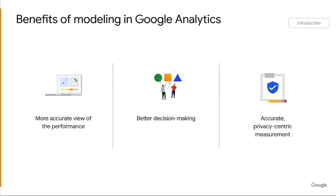Modeling poses several benefits to your business, including a more accurate view of your performance. Modeling can help you get a more complete picture of your website traffic and conversions when you lose data due to cookies consent, browser updates, and other factors — filling in the gaps with estimates based on historical data and machine learning algorithms. Better decision making: modeling can help you identify trends and patterns and understand how your website is performing, helping you make better decisions about your marketing campaigns and allocate resources more effectively. And lastly, accurate privacy-safe measurement: Google Analytics modeling is helping advertisers preserve measurement while respecting user consent choice by enhancing your understanding of the customer journey when observed behavioral and conversion data is not available. For example, with behavioral modeling, if users don't consent to analytics cookies, you are still able to generate important customer insights while respecting your users' privacy preferences.